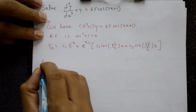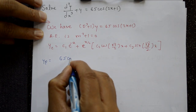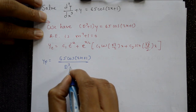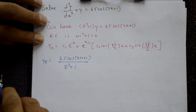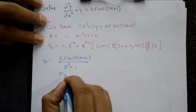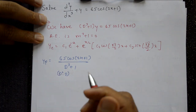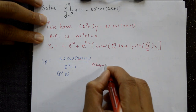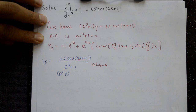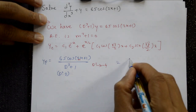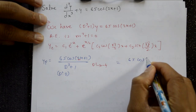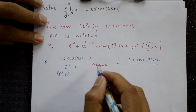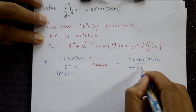Particular integral: yp = 65cos(2x + 1) / (D³ + 1). Since D³ = D²·D, using Type 2 with D² = -a² = -4. The denominator becomes D² - 4D + 1 = -4D + 1 - 4 = D² - 4D + 1. Now evaluate: substituting D² = -4 gives denominator = -4 - 4D + 1 = -3 - 4D.